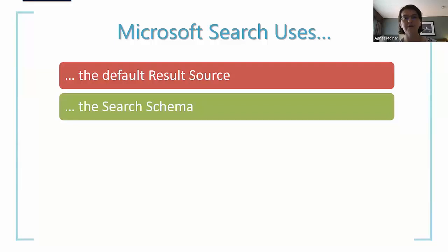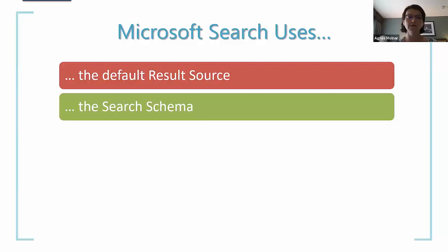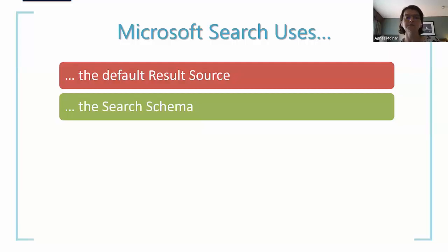For example, if your organization is a product company and product information is super important, if someone searches for a product name, you want relevant results. However, your custom properties are considered to have very low weight in the ranking model by default. But if you make your property searchable and change the weight context of that property, it has an impact on ranking - it will rank your product documents higher, even in Microsoft Search, not only in classic search. This is another option to impact the out-of-the-box Microsoft Search.